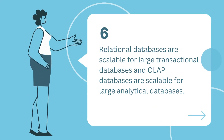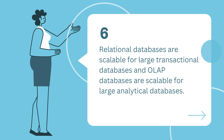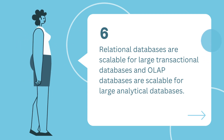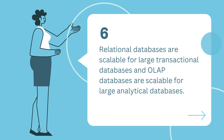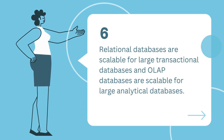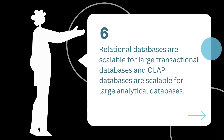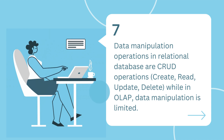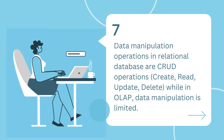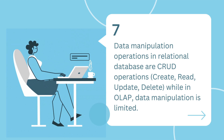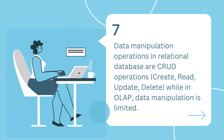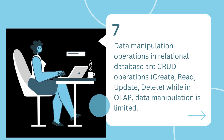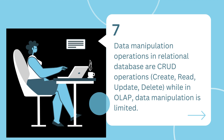Number six: relational databases are scalable for large transactional databases, and OLAP databases are scalable for large analytical databases. Number seven: data manipulation operations in relational database are CRUD operations — create, read, update, delete — while in OLAP, data manipulation is limited.